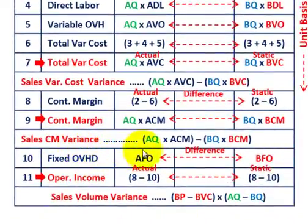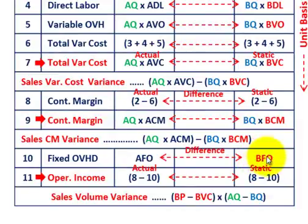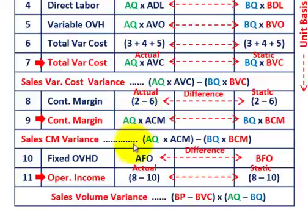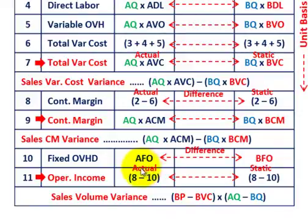For fixed overhead, we take our total actual fixed overhead cost for the period and compare it to the budgeted fixed overhead — the static budgeted amount. Operating income is the contribution margin minus fixed overhead (item 8 minus item 10), determined for both our actual results and our static budget.